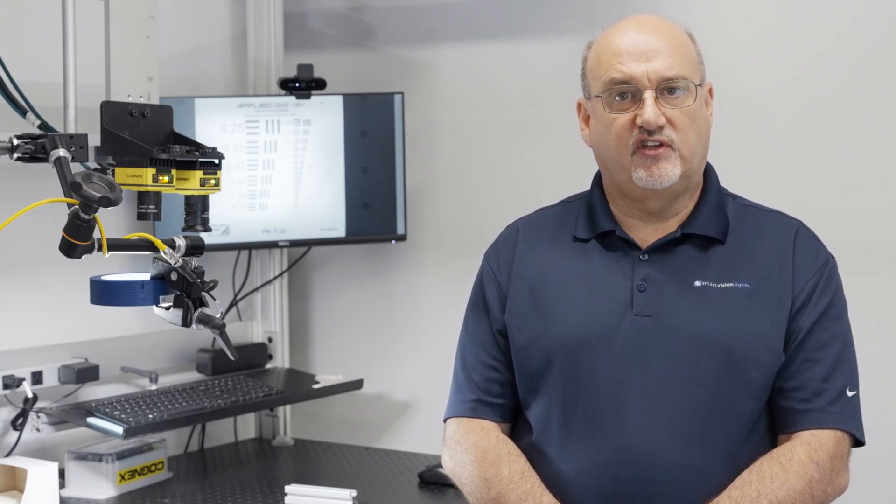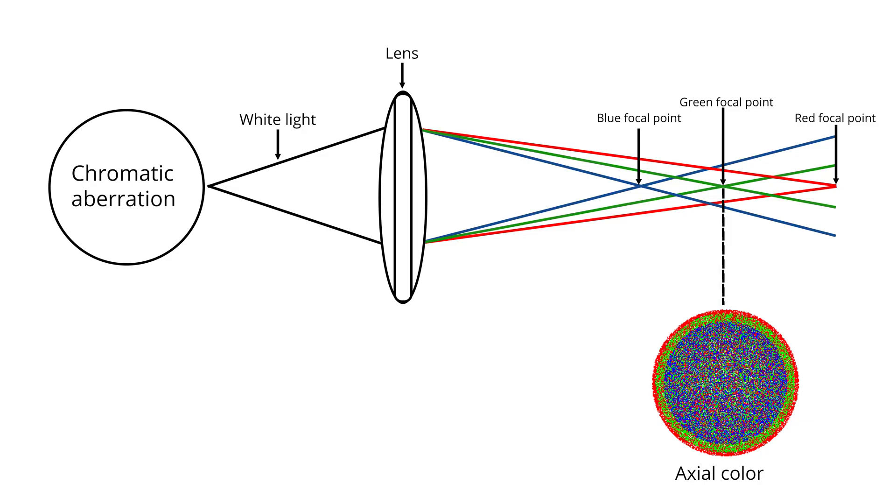When focused on the imager plane, these chromatic differences cause slight magnification errors for any given point. If the middle green wavelengths are in perfect focus, the blue points will be a little undersized and the red points a little oversized. This effect causes some loss of contrast and sharpness on the edges, even in monochrome inspections.